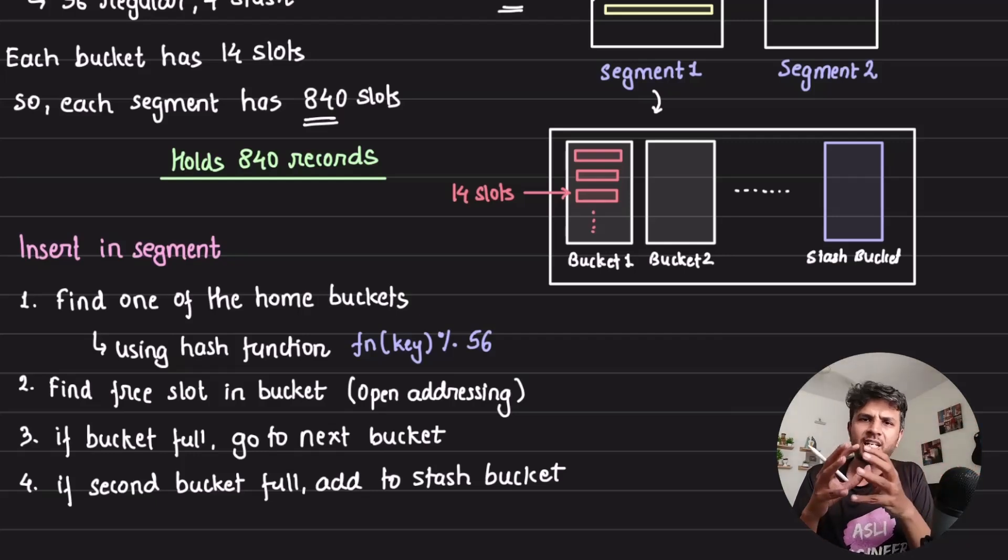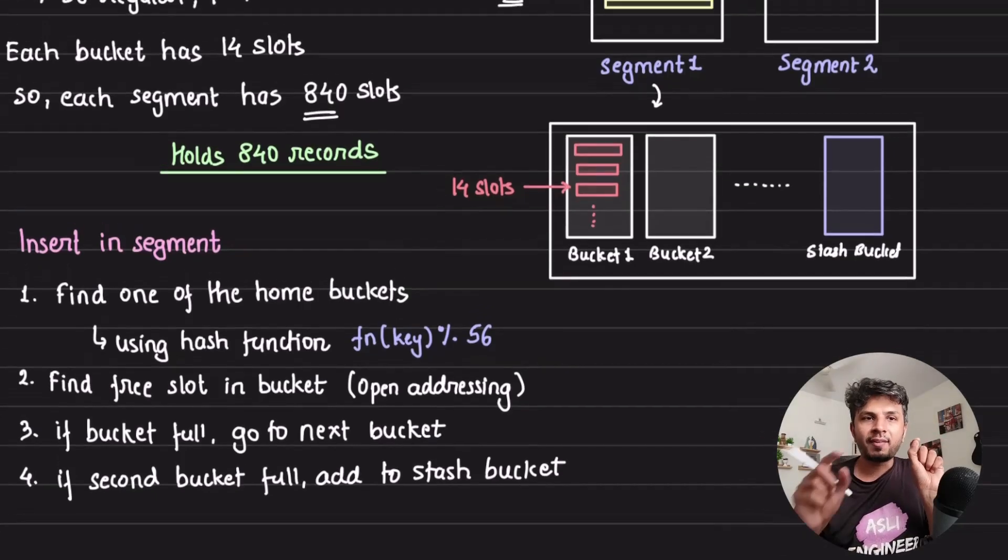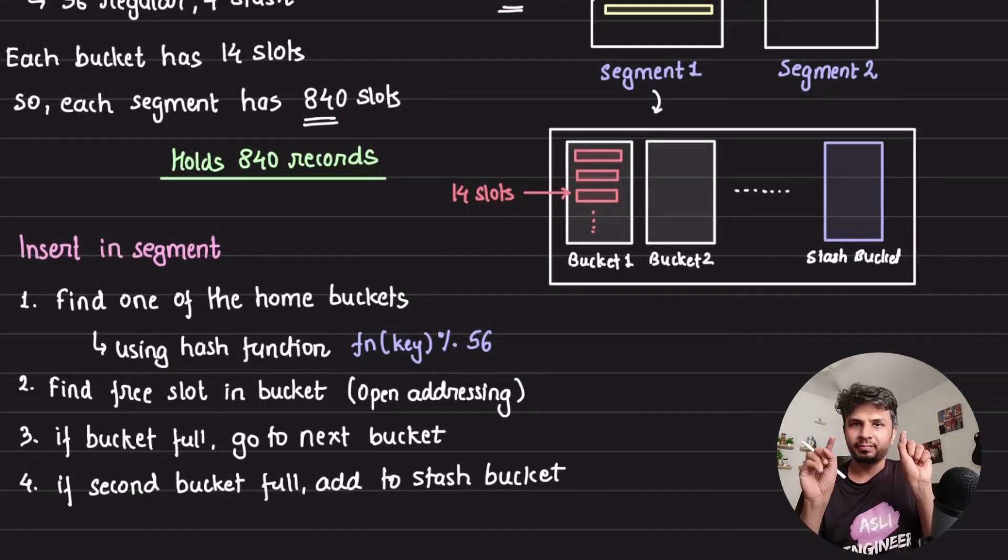How would I find it? Again, passing through the hash function mod 56, I'll find a home bucket for it to reside. If that bucket is full, I will go to the next bucket, the bucket next to it. And if second bucket is full, I will put it in the stash bucket. That's the whole idea.